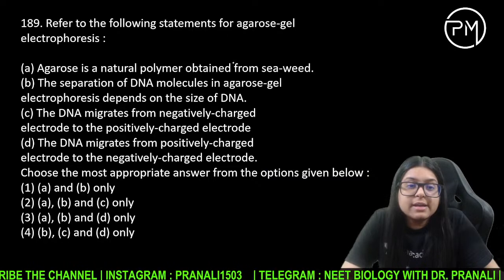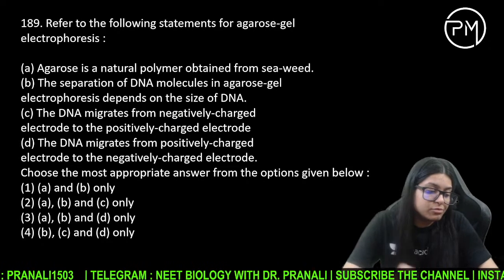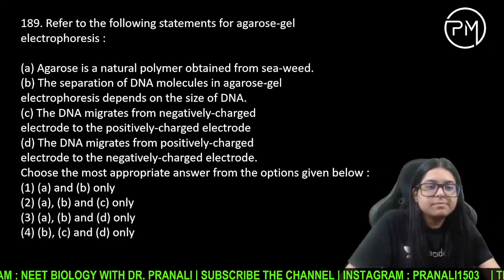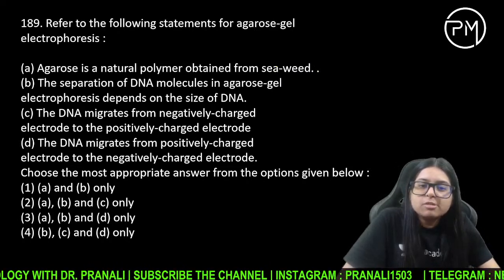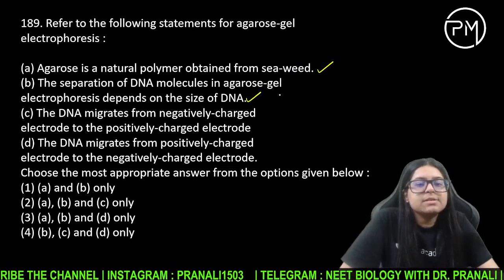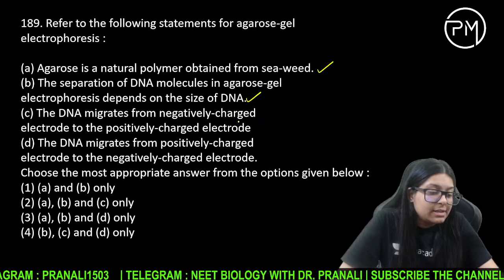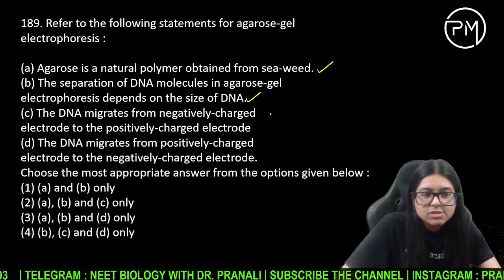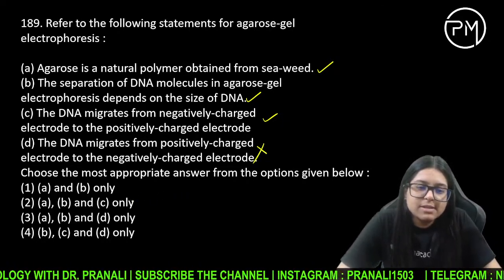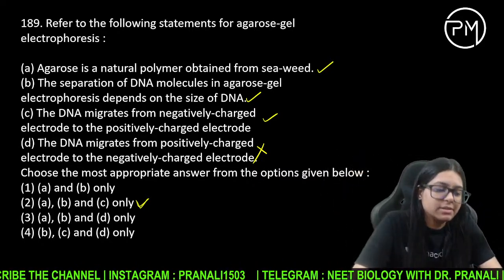Agarose natural polymer hai, seaweed se obtain hota hai. Size of DNA ke basis pe separate hota hai. DNA migrate karta hai negatively charged se positively charged electrode ki taraf — DNA negatively charged hota hai, positive ki taraf migrate karta hai. Answer A, B, C.